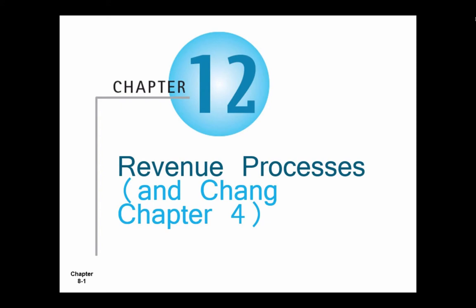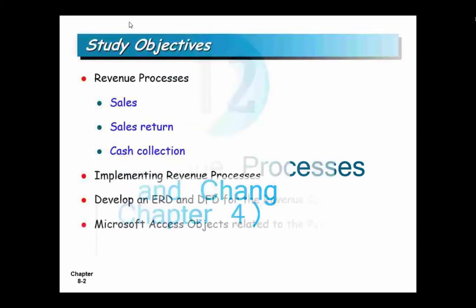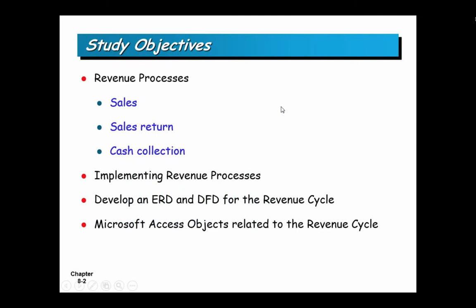We are going to use our discussion of these processes to talk about various more advanced capabilities of Microsoft Access. We'll talk about revenue processes and break it down into three sub-processes: the sales sub-process, the returns sub-process, and cash collection.